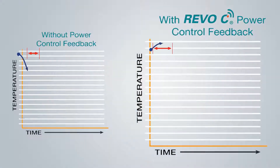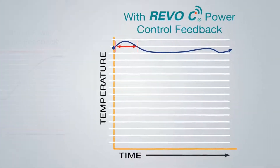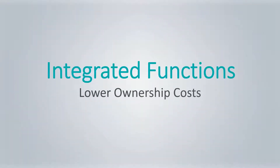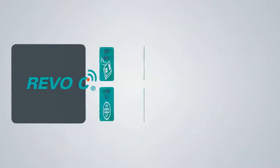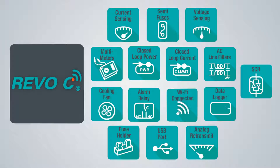Revo C uses control feedback to immediately adjust thermal performance and keep your application's temperature constant. Real functionality that gets the best out of SCR switching includes voltage sensing, data logging, wifi current sensing, semiconductor fusing, and more.